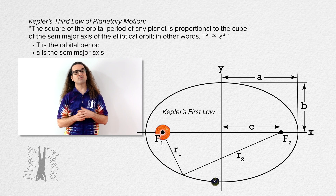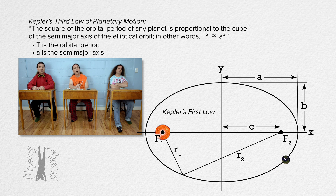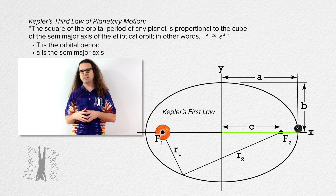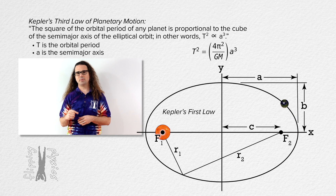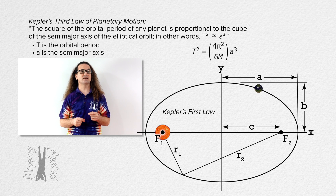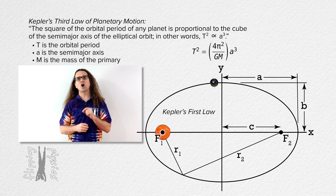Billy, please remind me of what the semi-major axis is. The semi-major axis A is the longest distance from the center of the ellipse to the curve of the ellipse. You can see it labeled in the figure. More specifically, Kepler's third law states that orbital period squared equals the quantity 4π² over the quantity of the universal gravitational constant times the mass of the primary, all times the cube of the semi-major axis.